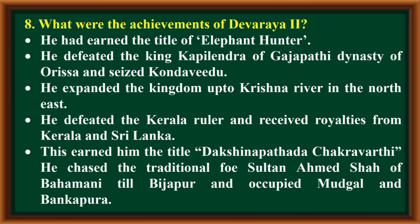What were the achievements of Devaraya II? He had earned the title of Elephant Hunter. He defeated the King Kapilendra of the Gajapati dynasty of Varissa and conquered Kondavidu. He expanded the kingdom up to the Krishna River in the northeast. He defeated the Kerala ruler and received royalties from Kerala and Sri Lanka, earning him the title Dakshinapath Chakravarti. He also chased the Sultan of Bahmani till Vijayapur and occupied Mudgal and Bankapura.